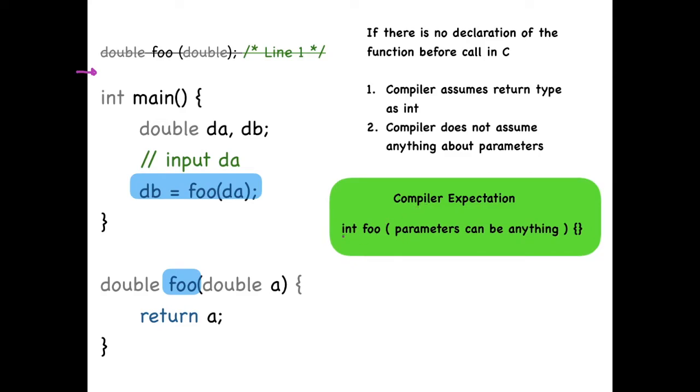So according to the compiler, as long as the return type is int, it does not care anything about the parameters. It can be of any type. They can be any number of parameters.